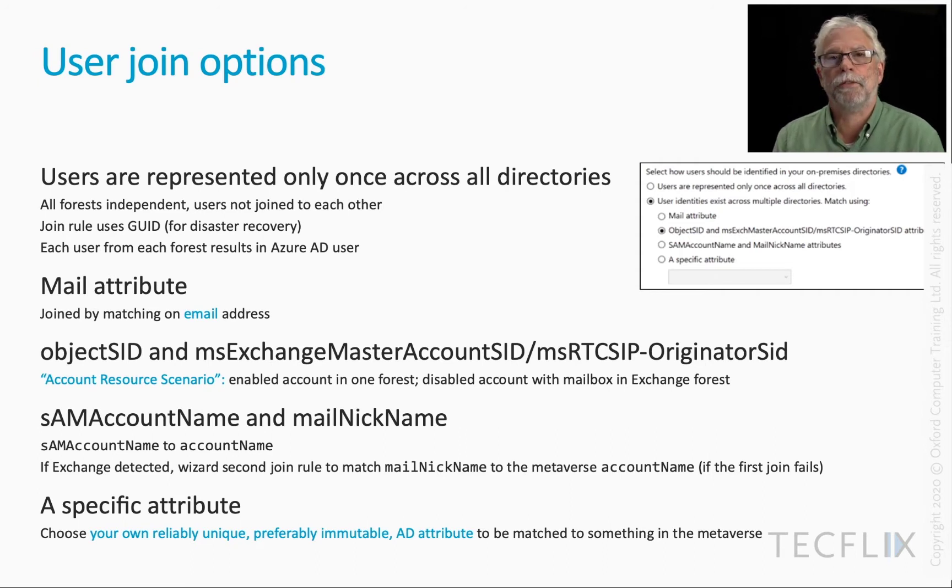A great example of this would be employee ID. If you have faithfully used a totally unique employee ID everywhere, there's no reason why that shouldn't be used. There are certainly organisations that use employee ID. So those are your user join options, and depending on what you take, the default rules will be written out differently.